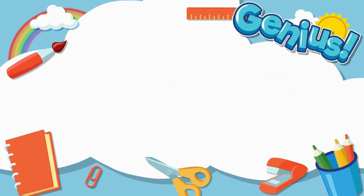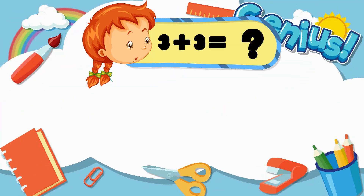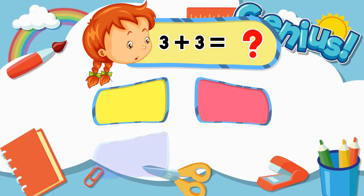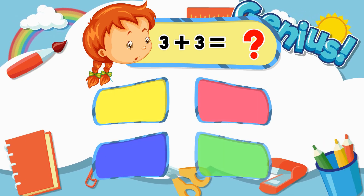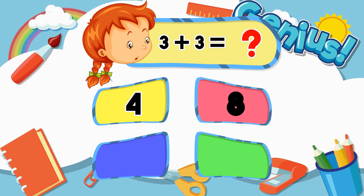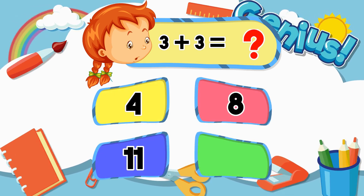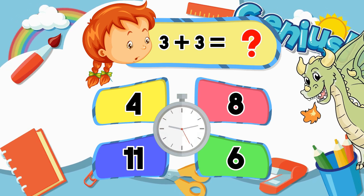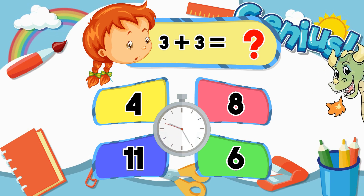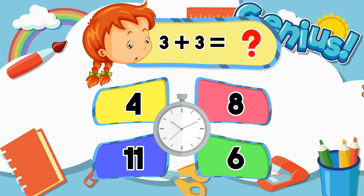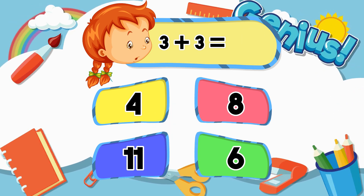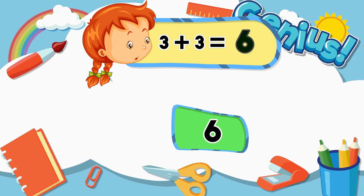What is three plus three? Options: Four, Eight, Eleven, Six. Answer: Six.